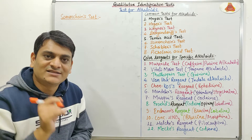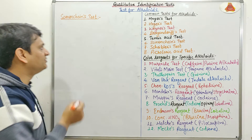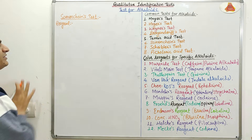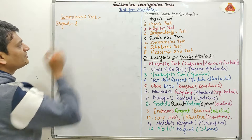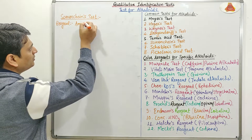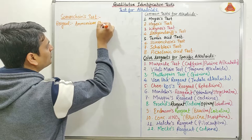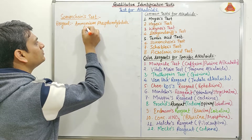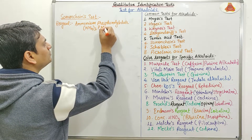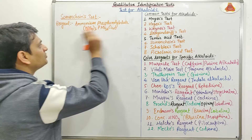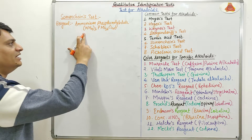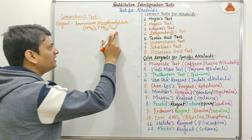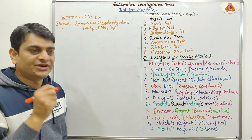Under Soman Chin's test, first I will discuss the preparation of the resin. For preparation of the resin, first we will take Ammonium Phosphomolybdate, that is (NH4)3 PMo12O40, which will be dissolved in HNO3.